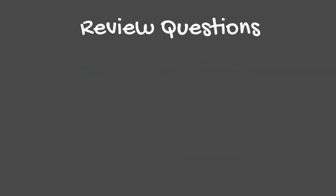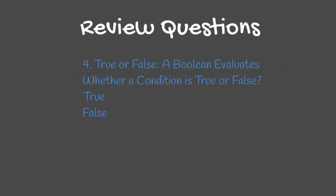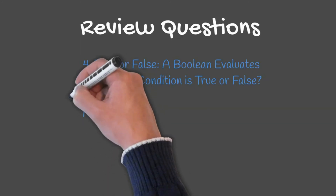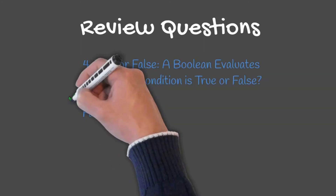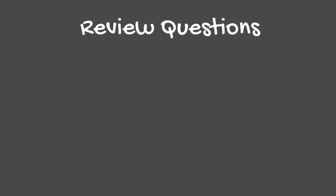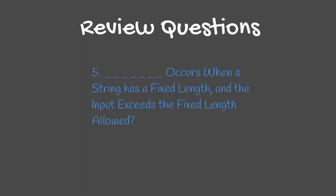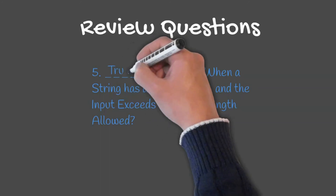Question 4: True or false — a boolean evaluates whether a condition is true or false. This would be true. Question 5: Blank occurs when a string has a fixed length and the input exceeds the fixed length allowed. The answer is truncation.